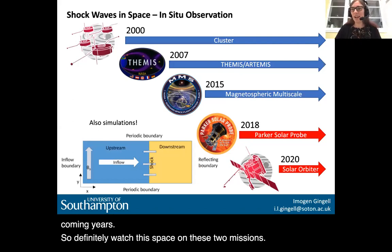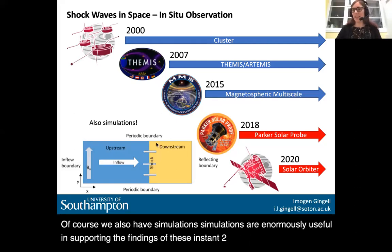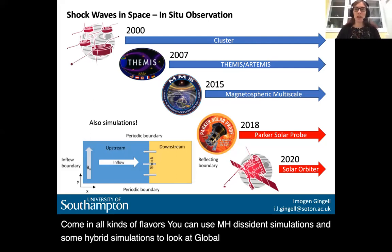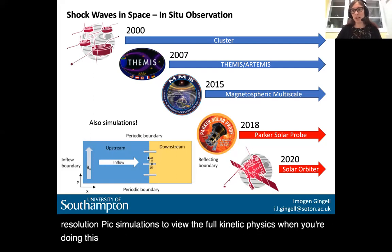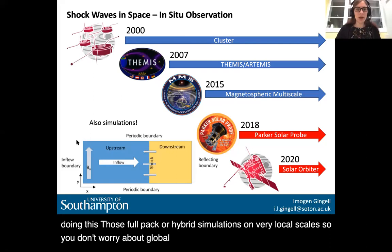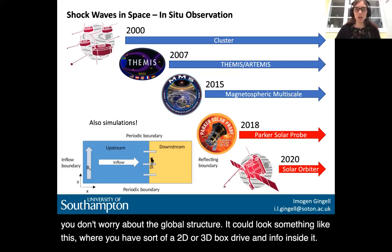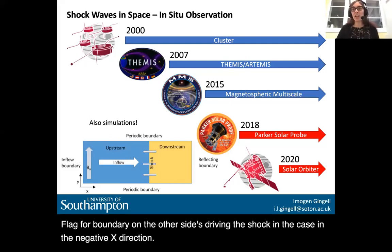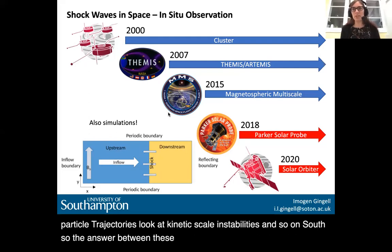Of course, we also have simulations, which are enormously useful in supporting the findings of these in situ missions. They can come in all kinds of flavors: MHD simulations and hybrid simulations to look at global effects, or high-resolution PIC simulations to view the full kinetic physics. When doing full PIC or hybrid simulations on very local scales, you have a 2D or 3D box — you drive an inflow that reflects off a boundary, driving the shock. You follow particle trajectories, look at kinetic-scale instabilities, and so on. The interplay between in situ observations and simulations is extremely important.